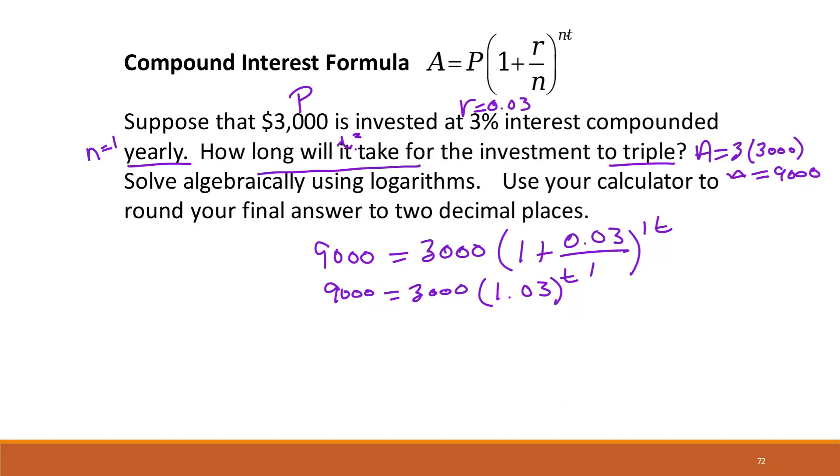So now we can solve, first we can divide by 3,000 so we isolate the term with the exponent. So 9,000 divided by 3,000 gives us 3 equal to 1.03 to the t.